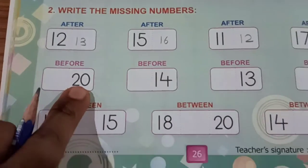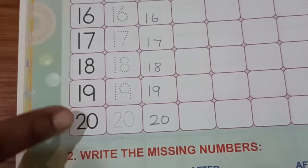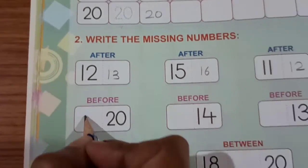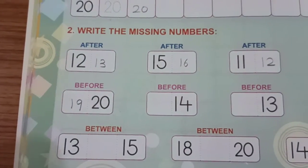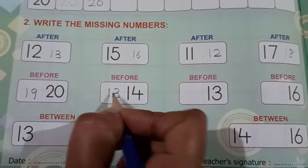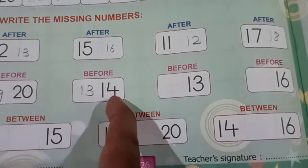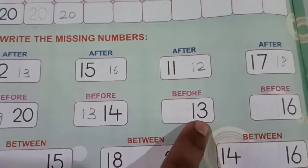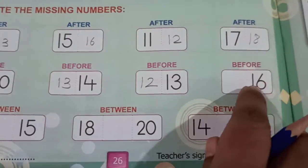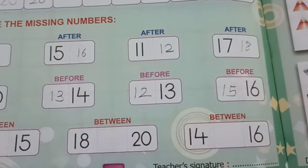Here, before the number, we have to write. Before 20, which number will come children? It is 19. You can see here — before 20, the number is 19, so I am going to write number 19 here. Here 14 is there. Before 14, which number will come? Number 13. After 13, only 14 will come, so before 14 the number is 13. Before 13, which number will come? 12. Before 16, which number will come? Number 15.